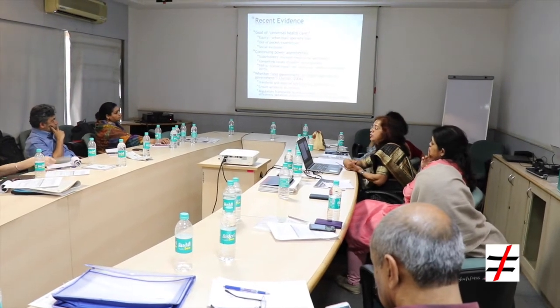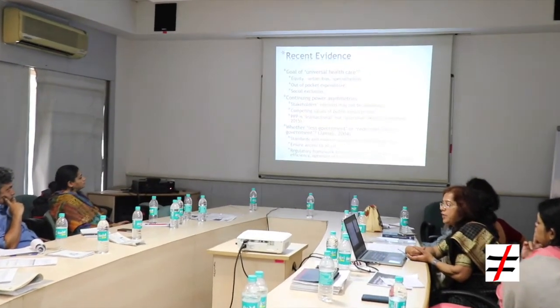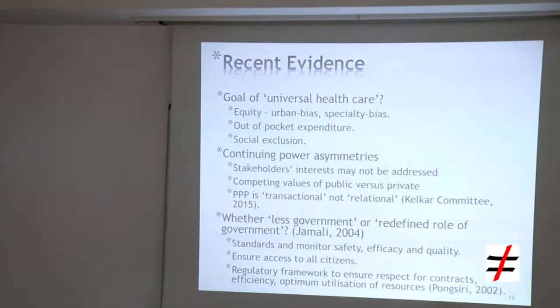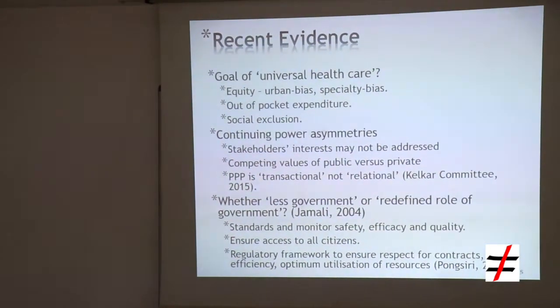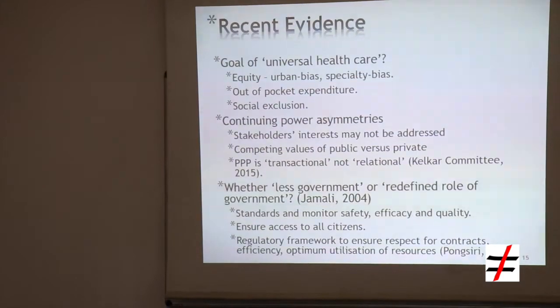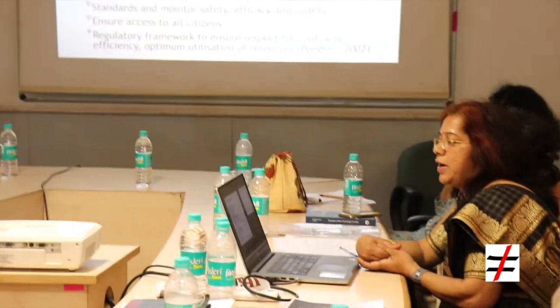The recent evidence shows the goal of universal healthcare is articulated in policy, but we are yet far from it. There is an urban bias and a specialty bias, people bear high out-of-pocket expenditures, and there is social exclusion of women, migrants, and many others. Power asymmetry is continuing, stakeholder involvement is lacking, and competing values of public and private partners persist. The Kelkar Committee noted that the current approach to PPP in India is more transactional than relational — based on give and take rather than building long-term relationships.